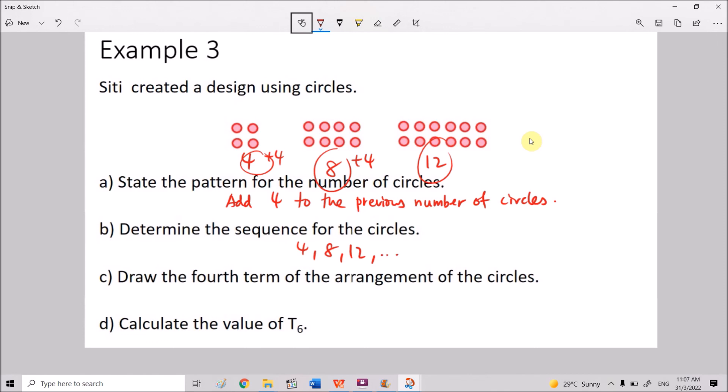The next question, draw the fourth term. So you need to draw. So even though we know that for the next one, we need to have 12 plus 4, which is 16 circles, we need to follow the orientation of the design here. You can see that we are adding 4, adding 4. So the drawing will be 1, 2, 3, 4, 1, 2, 3, 4, 1, 2, 3, 4. This is this, right? And you add another 1, 2, 3, 4. That is the drawing.